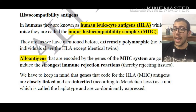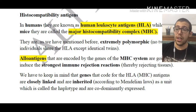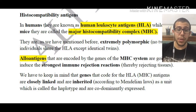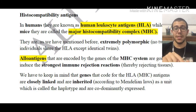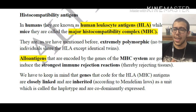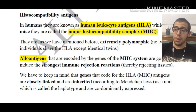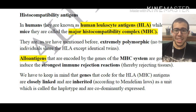They are extremely polymorphic. No two individuals share the HLA except identical twins. They are just like fingerprints, and this is the basis upon which we're going to have rejection or not. Alloantigens encoded by the genes of the MHC system are going to induce the strongest immune response or the strongest immune rejection reactions, thereby rejecting the tissues.